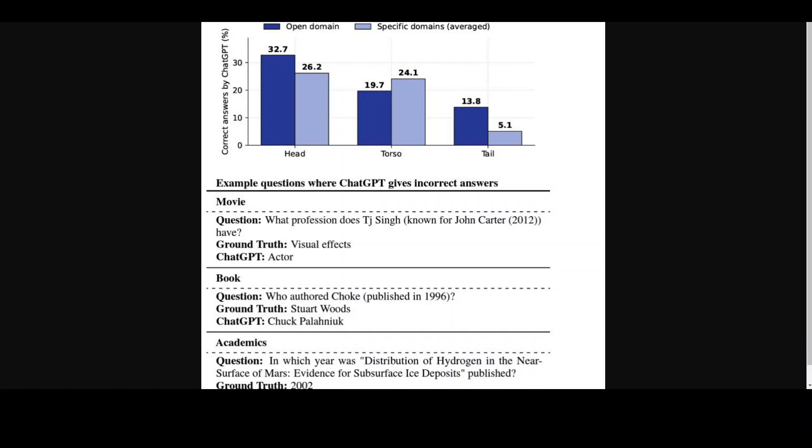For instance, if you look at this diagram, this shows that the question answering accuracy of ChatGPT declines following the order of Head, Torso, and Tail entities on the Head to Tail benchmark and is only 33% even for popular Head entities.